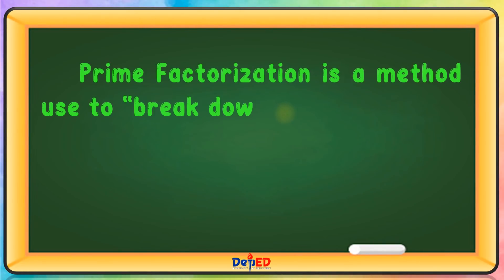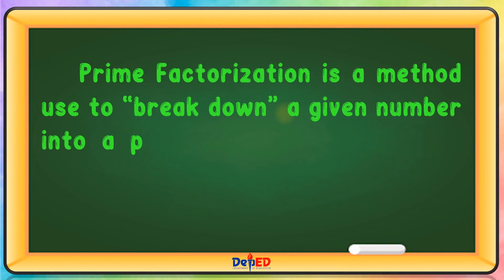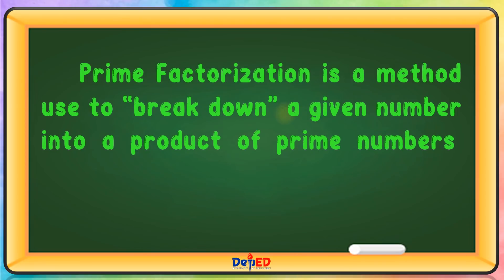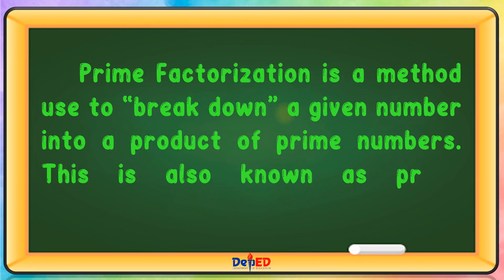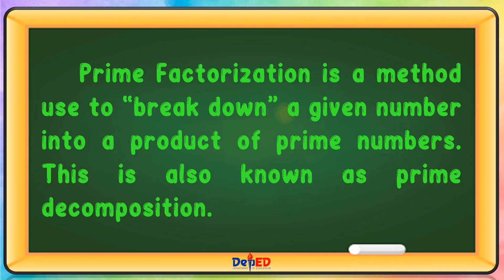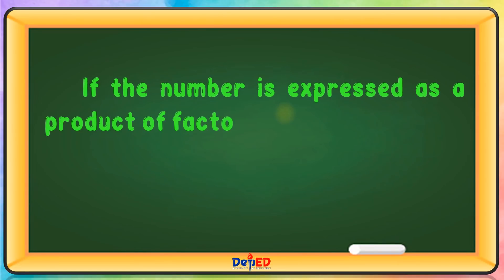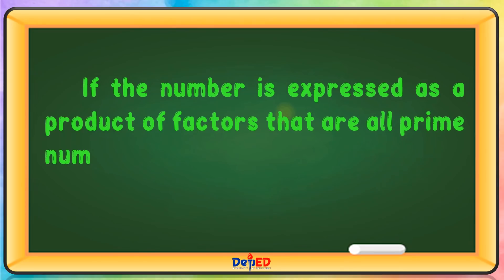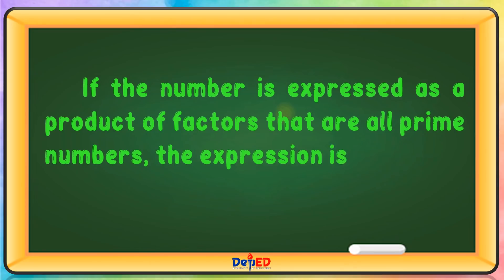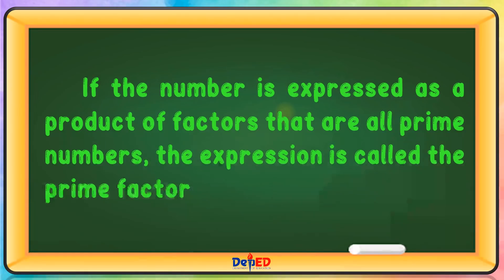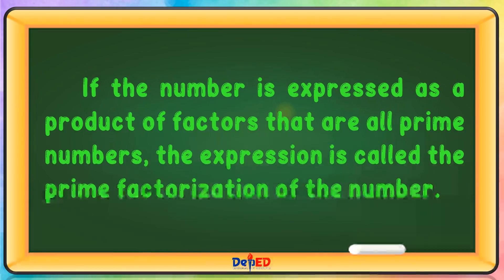Prime factorization is a method used to break down a given number into a product of prime numbers. This is also known as prime decomposition. If the number is expressed as a product of factors that are all prime numbers, the expression is called the prime factorization of the number.